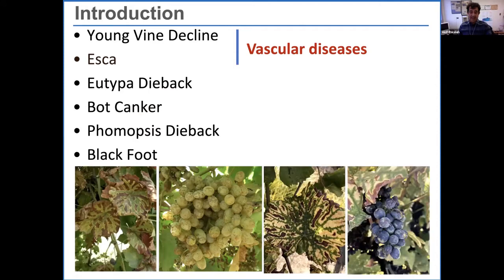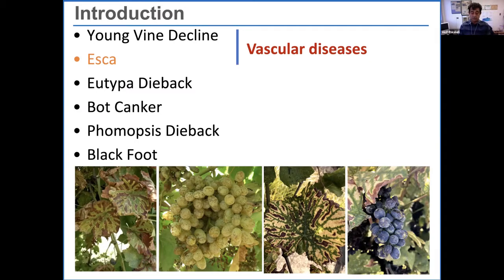The symptoms of ESCA on leaves include the well-known tiger stripe pattern, and fruit symptoms are visible in both black and white varieties. You might think the fungi get into the berries or leaves from outside, but that is not the case. These vascular pathogens colonize within the vascular tissue and produce secondary metabolites or toxins that cause symptoms on leaves and berries. This means that whatever you apply to control them must be systemic — applying something from outside will not affect or control young vine decline and ESCA pathogens.